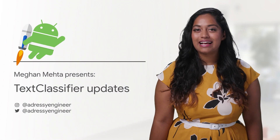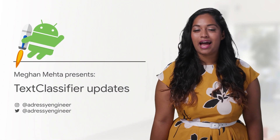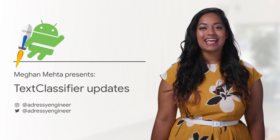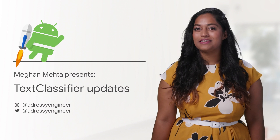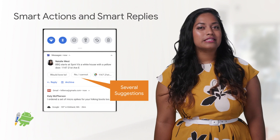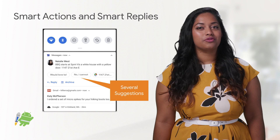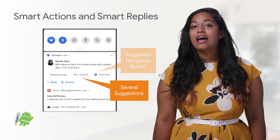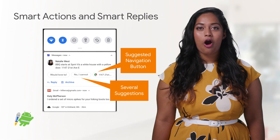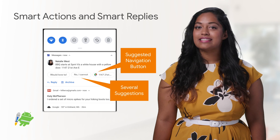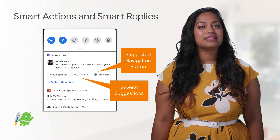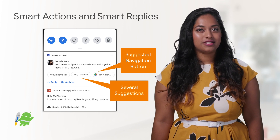Android Q has updated the Text Classifier API with Smart Reply, new actions, and selections based on understanding the meaning of text. Smart Reply supplies short message replies. Suggested actions include deep links for tracking numbers, opening addresses, links, and more. It's automatically used with messaging style notifications.